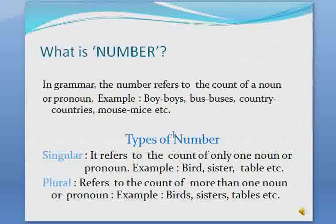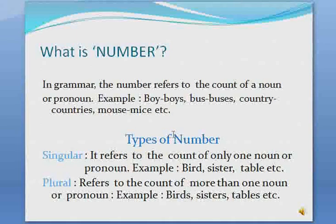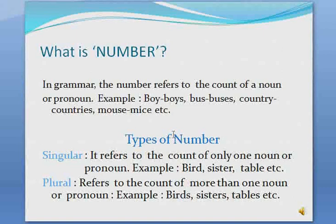Now let's see the types of number. There are two types: singular and plural. Singular number — the word itself tells us what it means. It refers to the count of only one noun or pronoun. Examples: bird, sister, table, etc. These words represent only one count. For example, in the sentence 'The bird is flying in the sky,' the word 'bird' represents only one bird.